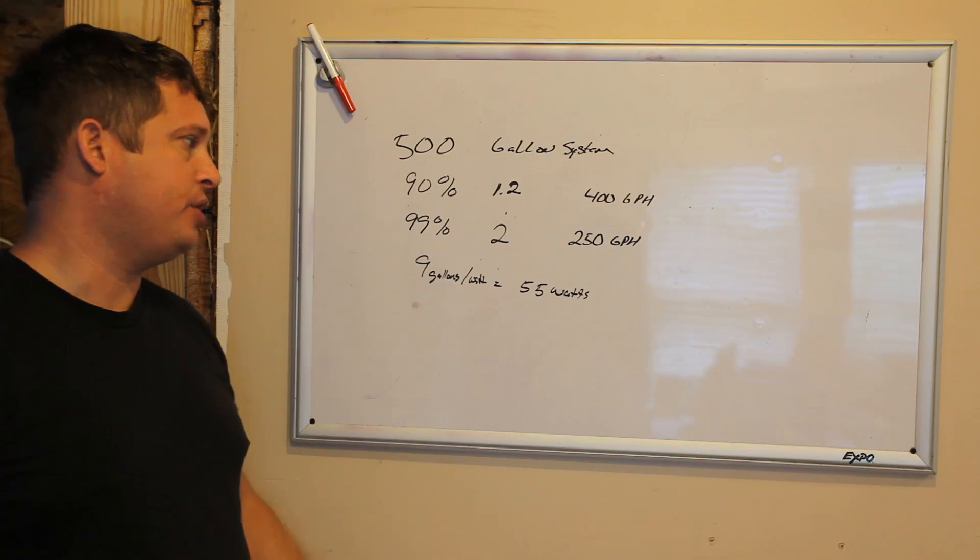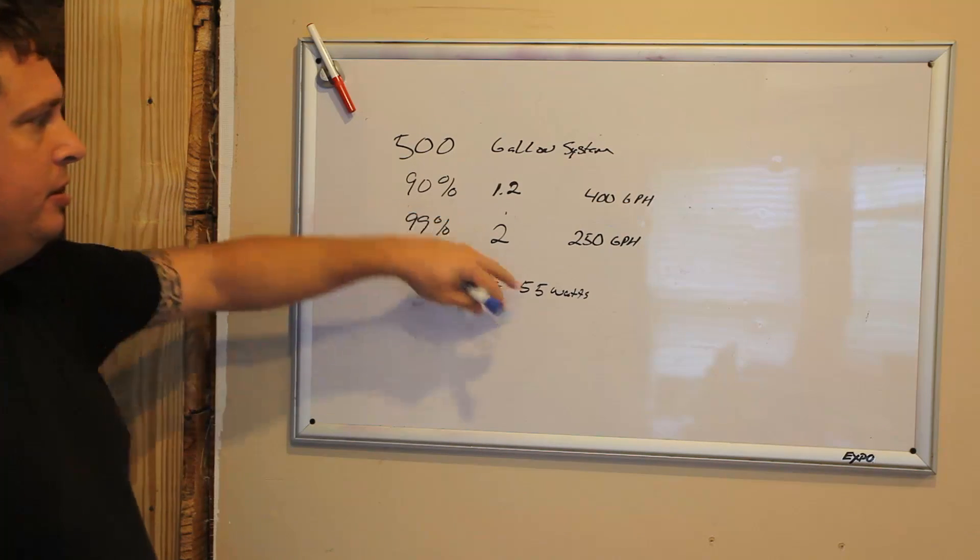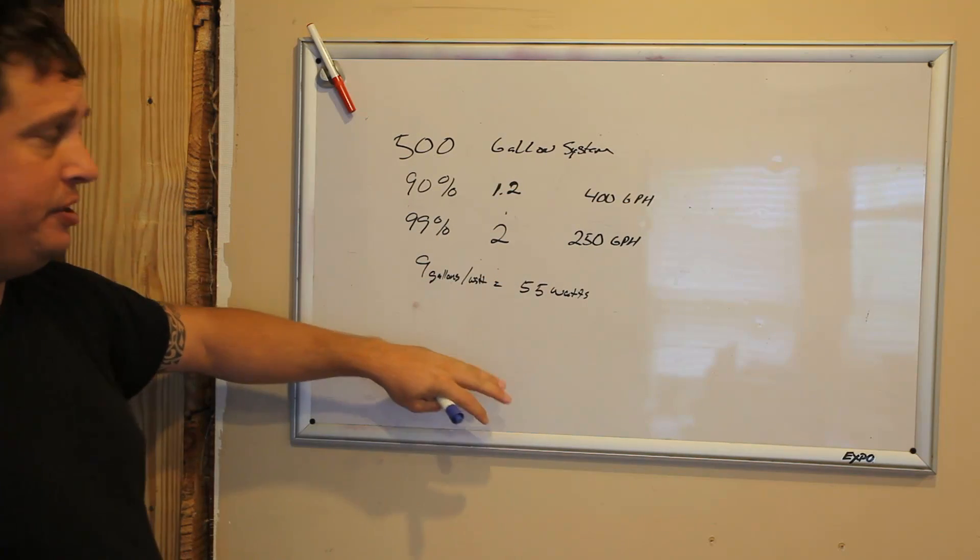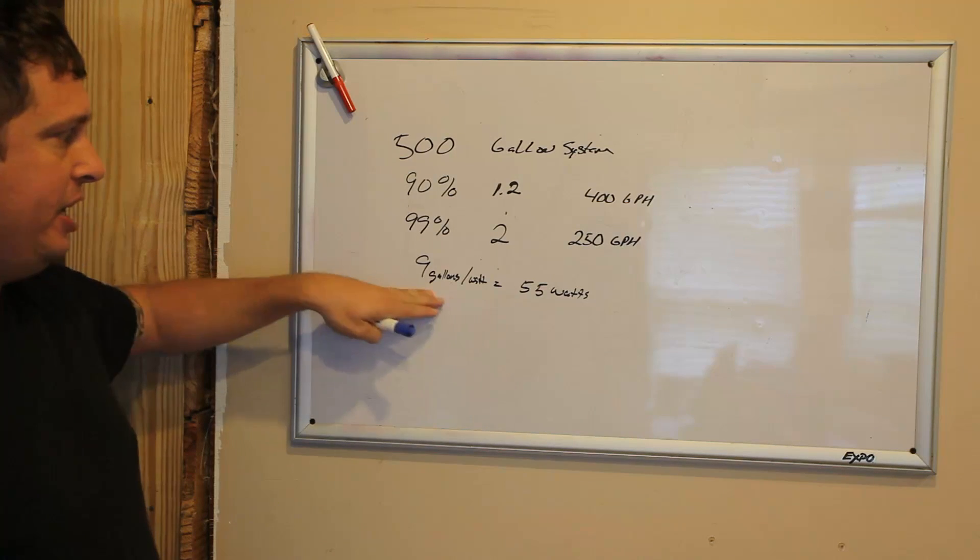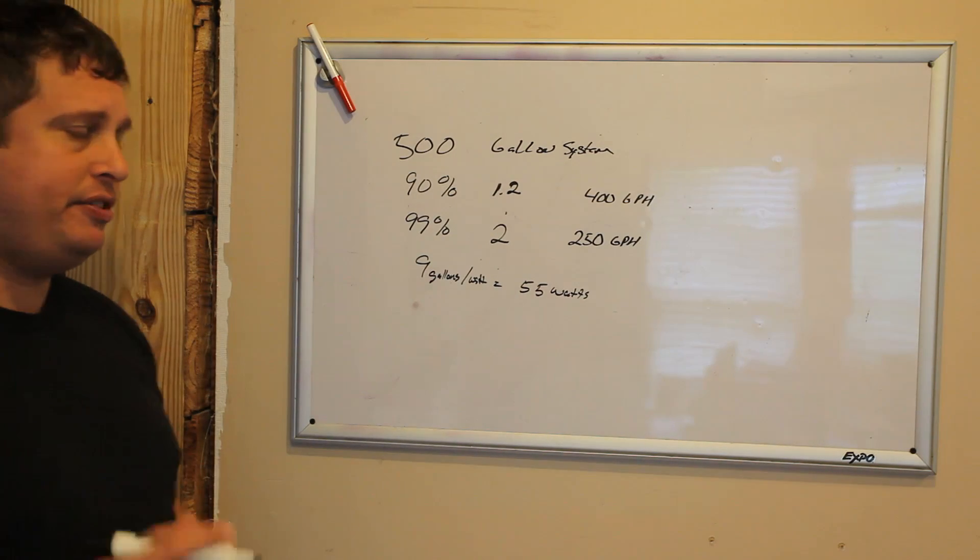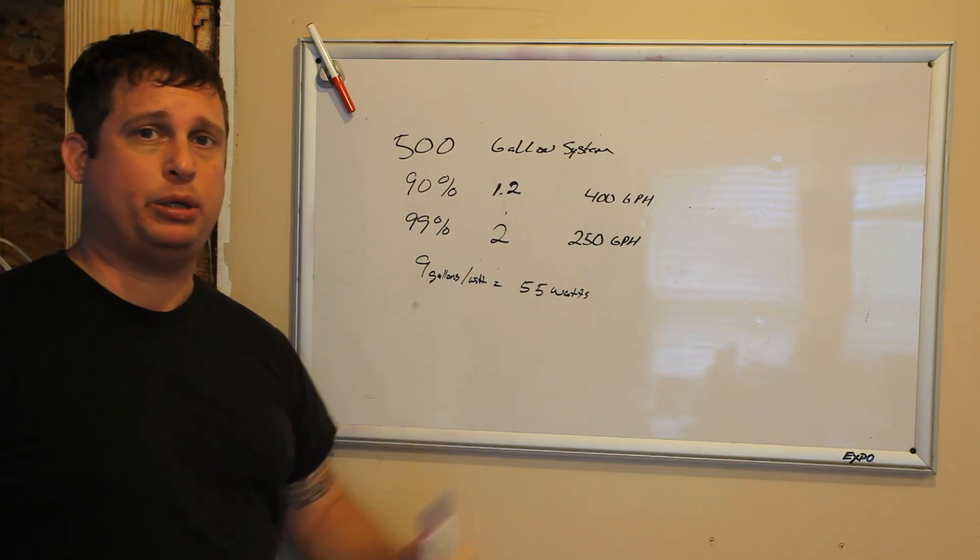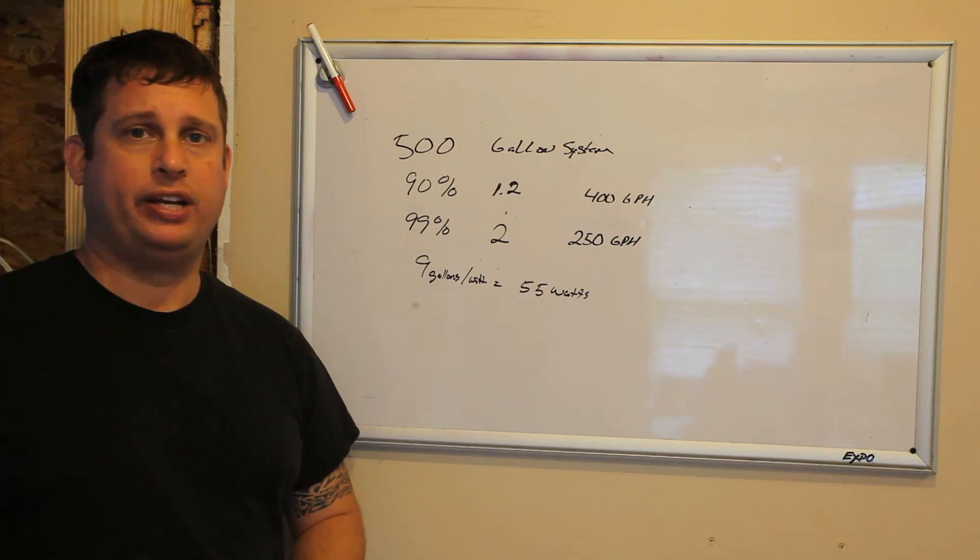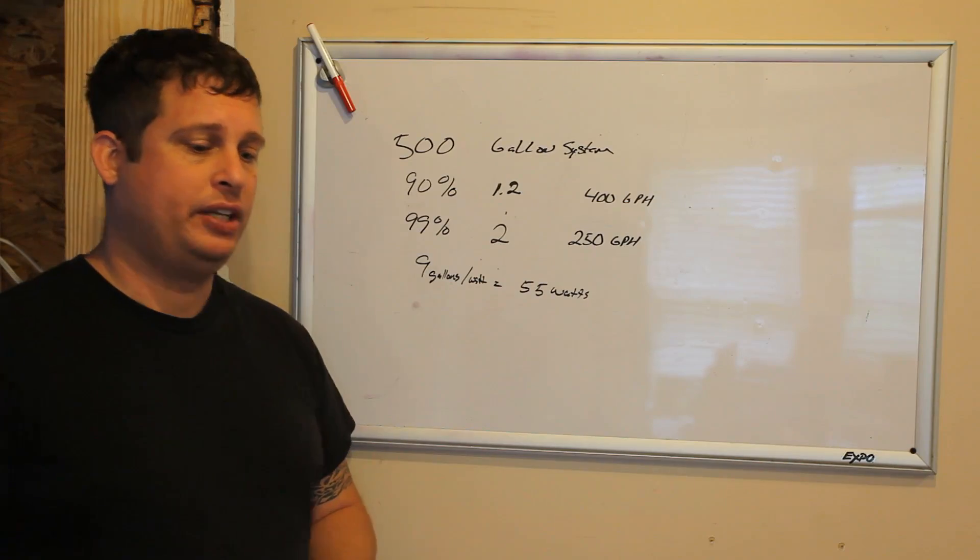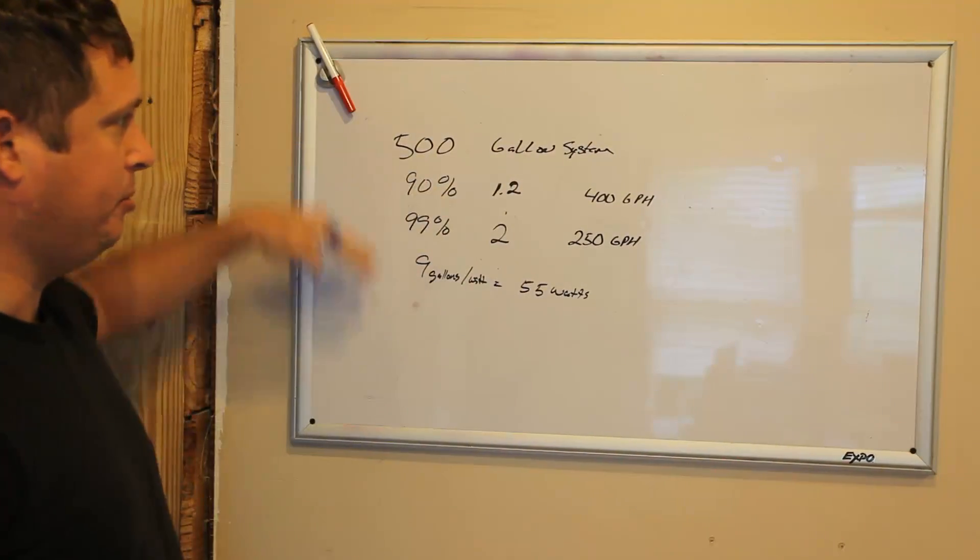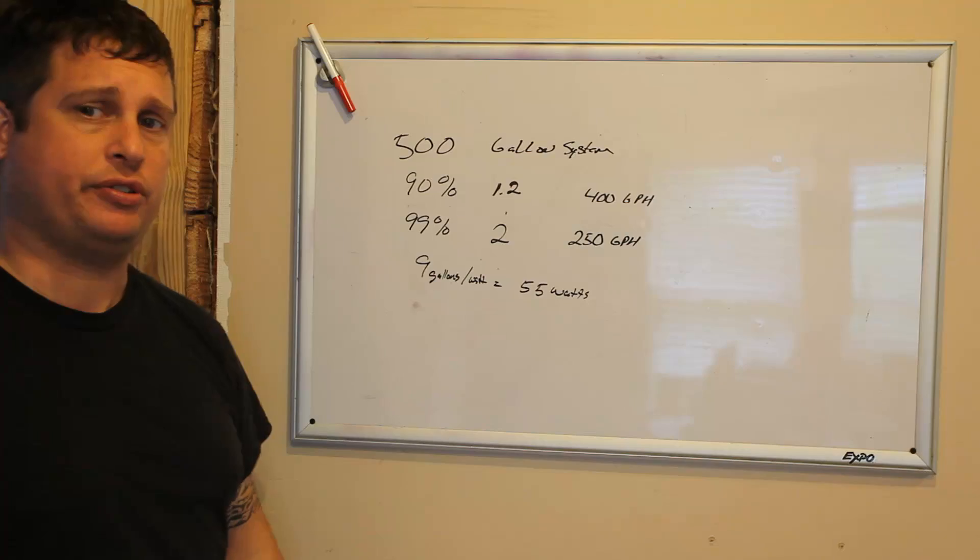So for my system, 250 to 400 gallons an hour through this filter at 9 gallons a watt. This range lines up perfectly with my protein skimmer, so I plan to run my water through my protein skimmer and then through my UV filter to eliminate a set of pumps.